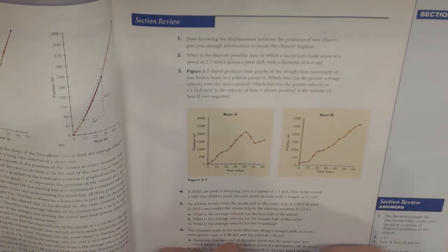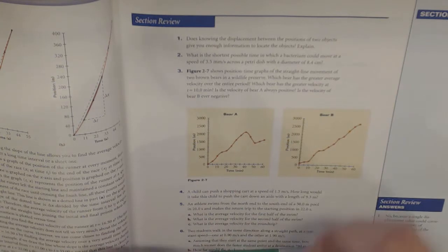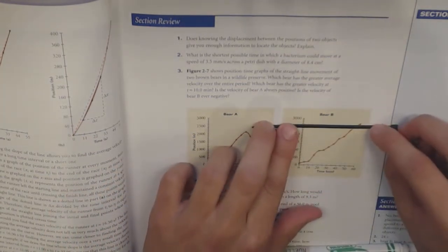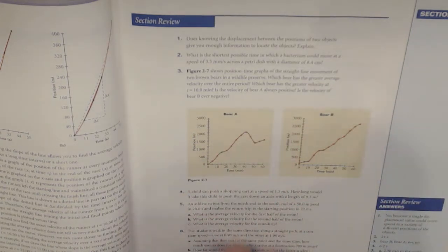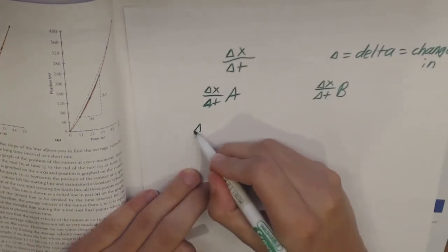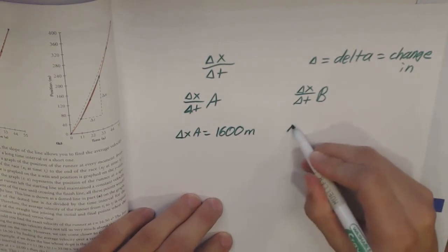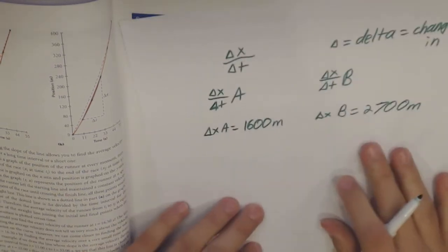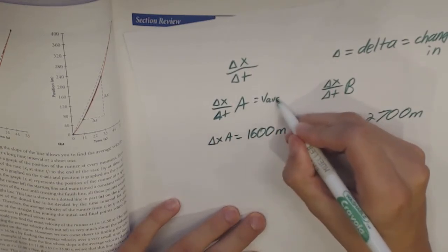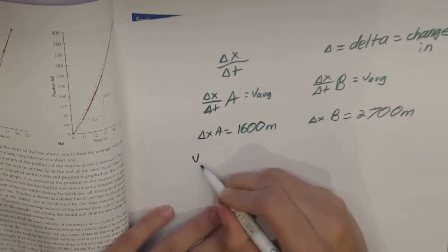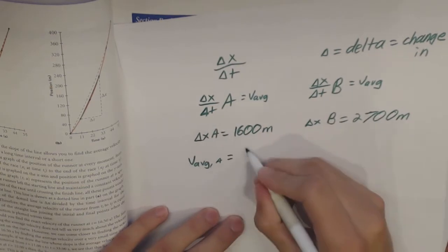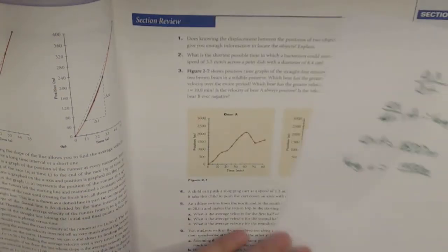Looking at bear A, at T equals 60 minutes, he's moved about 1,600 meters. And if we look at bear B, he's moved about 2,700 meters. So delta X for bear A equals about 1,600 meters, and delta X for bear B equals about 2,700 meters. The average velocity for bear A is going to equal 1,600 meters over our total time, which is 60 minutes.